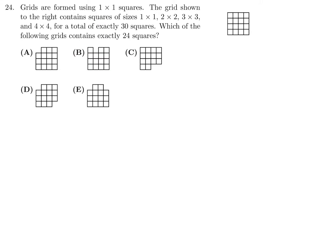Grids are formed using 1 by 1 squares. The grid shown to the right contains squares of size 1 by 1, 2 by 2, 3 by 3, and 4 by 4 for a total of exactly 30 squares. Which of the following grids contains exactly 24 squares? All right, before I jump into the answer choices, I'd like to talk a little bit about this guy right here.